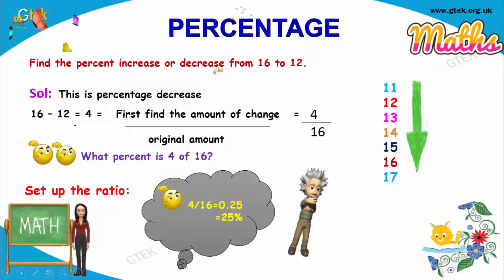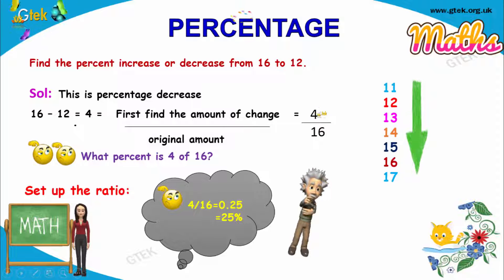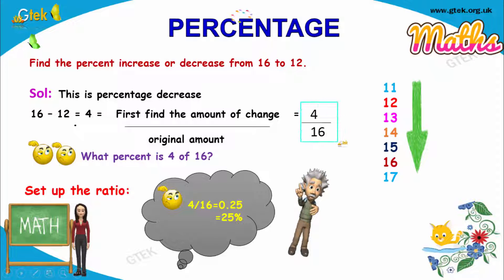The change is 4 divided by 16. So, 4 divided by 16 is 0.25, which is 25%. The percentage is reduced by 25%. That's the answer.